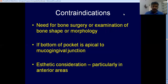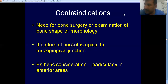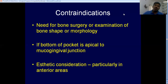What are the contraindications? If you want to do any alteration to the bone — if you have to do osteoplasty, or if you have to regenerate bone by putting some bone grafts or membranes — in all these cases you never do gingivectomy. In those cases, you reflect a flap so that you can see the underlying bone. When you do a gingivectomy, you cannot see the bone. Also, if the bottom of the pocket is apical to the mucogingival junction, you never try to eliminate that pocket by gingivectomy.